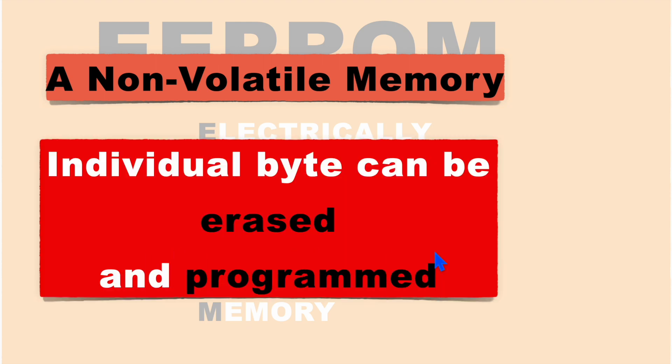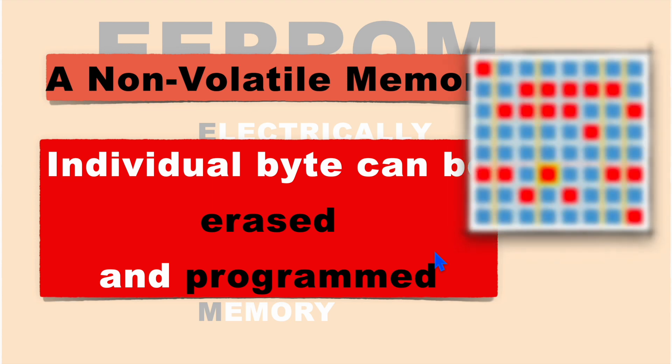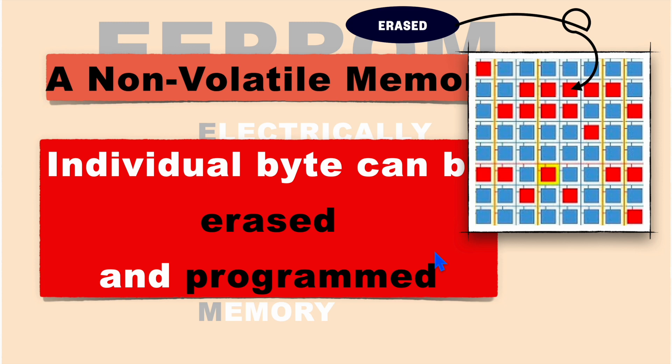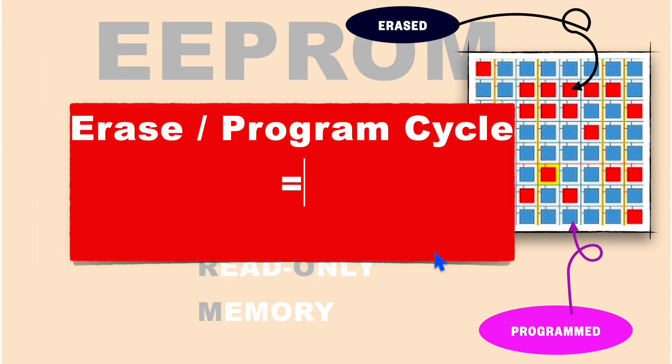The main advantage of EEPROM is that individual bytes can be erased and programmed, which is not possible in other kinds of memories like NOR flash. Another advantage is its erase and program cycle count is very high. You can erase or program this memory for almost 1 million times, while in the case of NOR flash memory, you can erase or program it for only about 10,000 times.